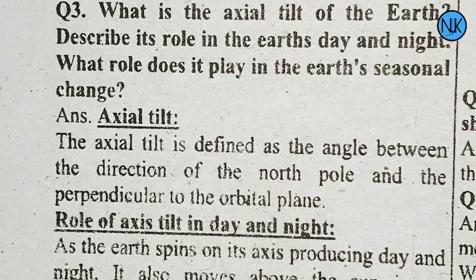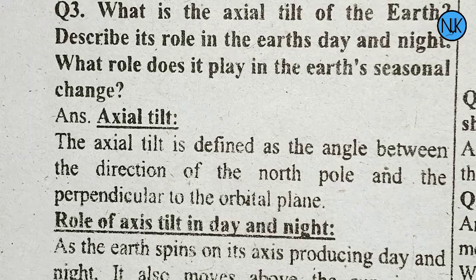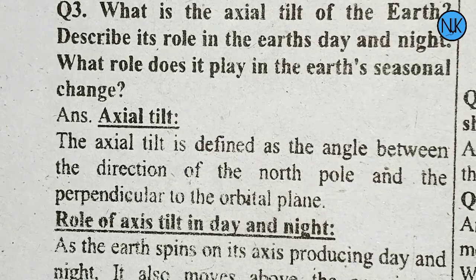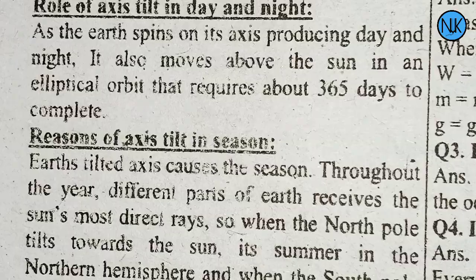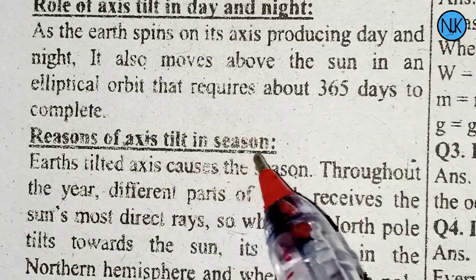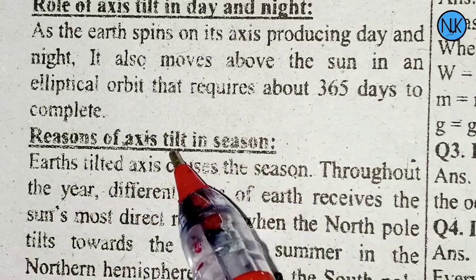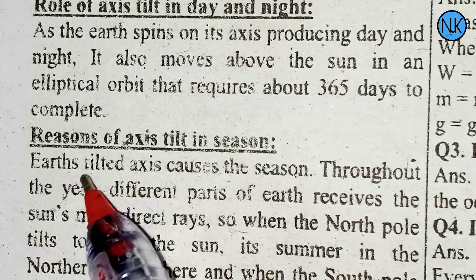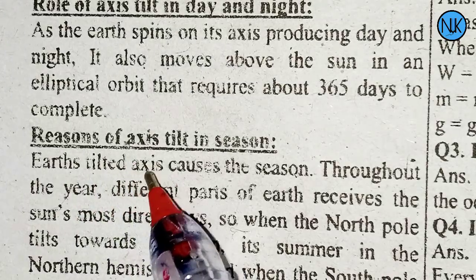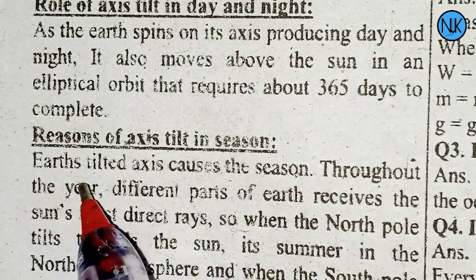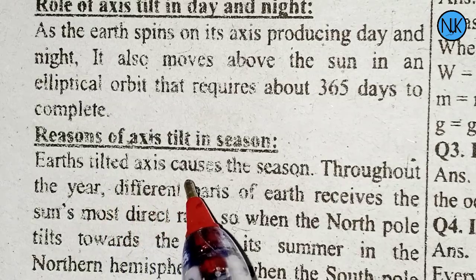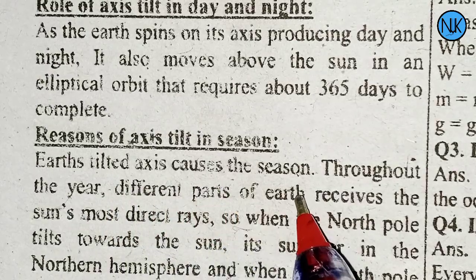It takes about 365 days to complete one orbit. The Earth's tilted axis causes the seasons.